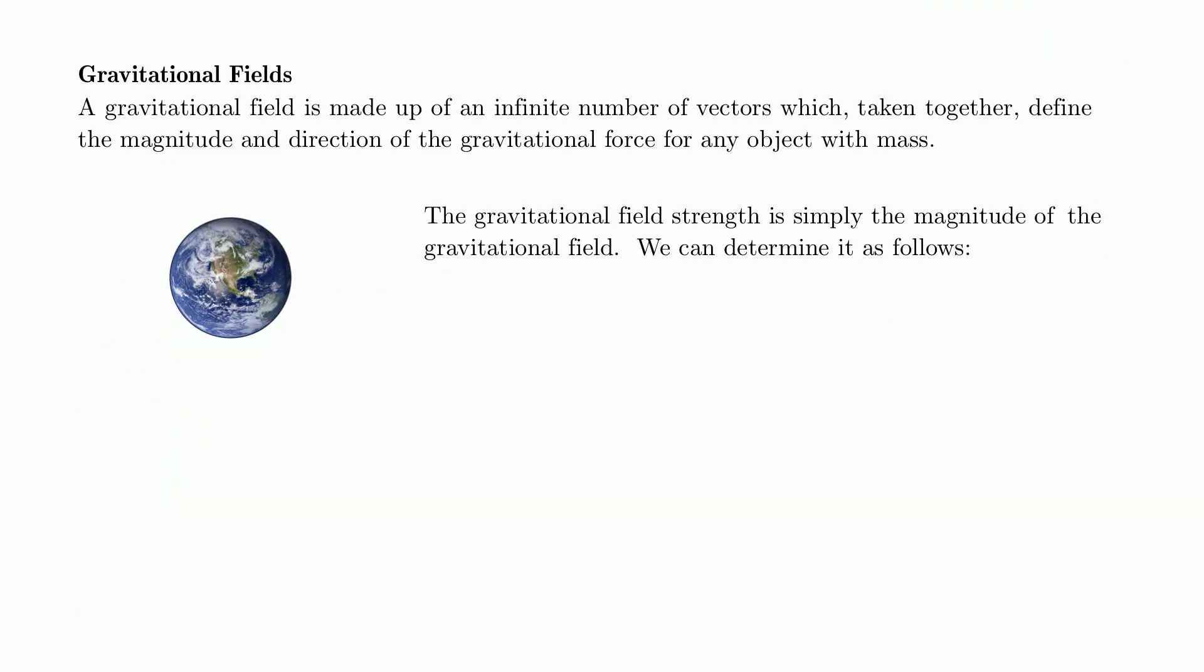Gravitational fields, then. We've talked about the gravitational force. That's mainly review. A gravitational field is made up of an infinite number of vectors. And we kind of saw that in the little diagram. That basically when you take them together, they define the magnitude and the direction of the gravitational force for any object with mass. So if I were to place a mass right here, some object with a mass right here, I could basically determine the gravitational force on that because if I know what the field is, I know what the force is going to look like. And it's basically going to accelerate in this direction because if I know what the field looks like, I can figure out what the force is for any mass. So the gravitational field strength is a different term.